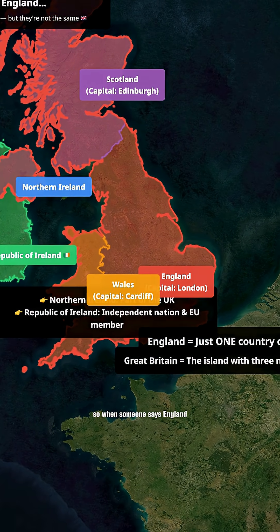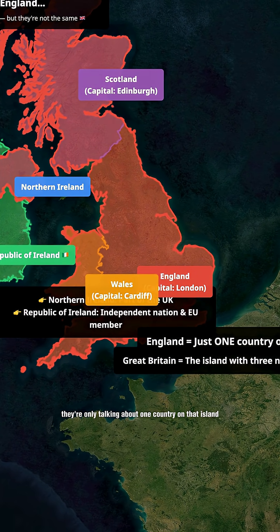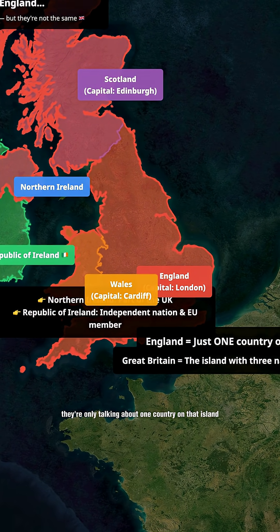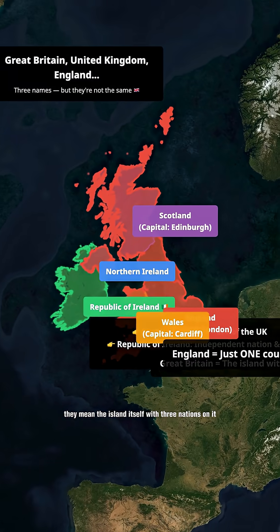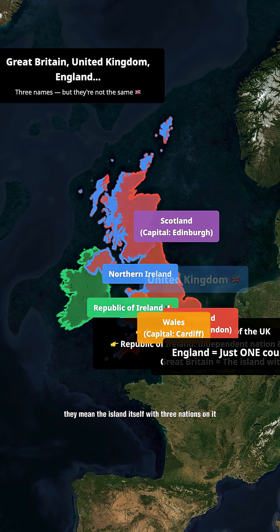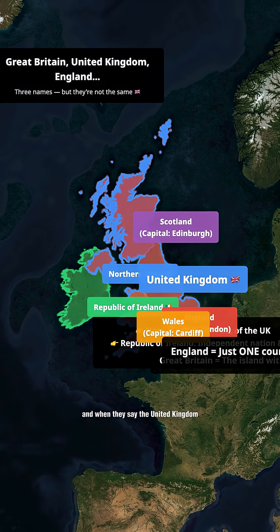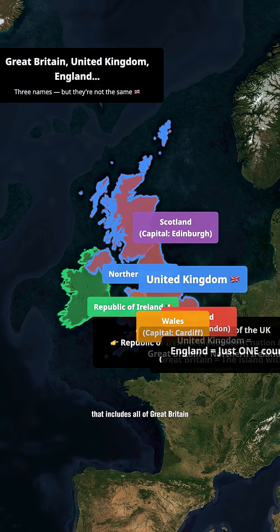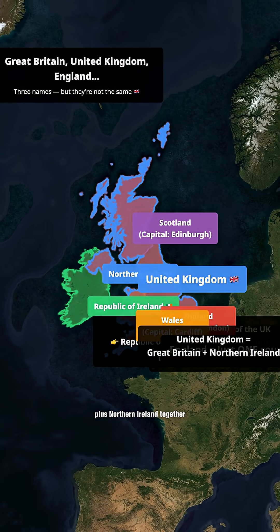So when someone says England, they're only talking about one country on that island. When they say Great Britain, they mean the island itself, with three nations on it. And when they say the United Kingdom, that includes all of Great Britain plus Northern Ireland.